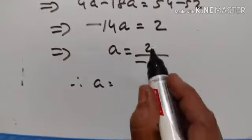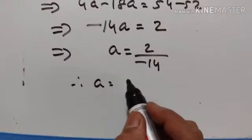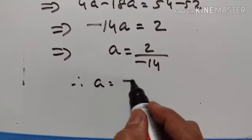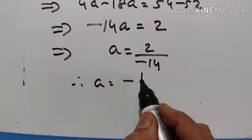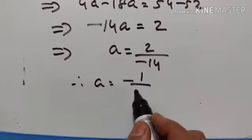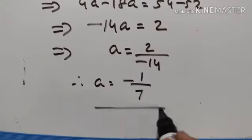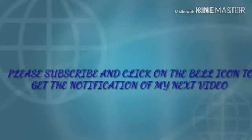Therefore a is equal to 2 divided by minus 14, which gives a equal to minus 1 upon 7.